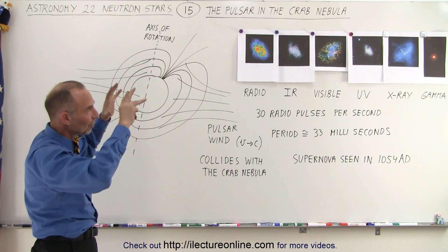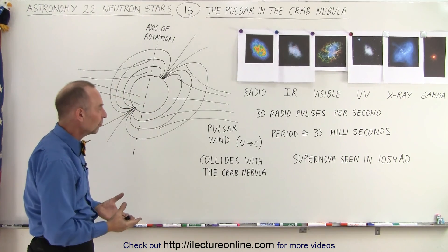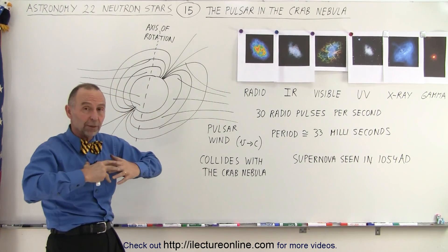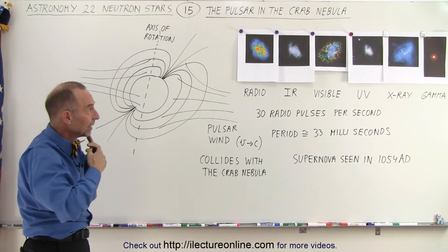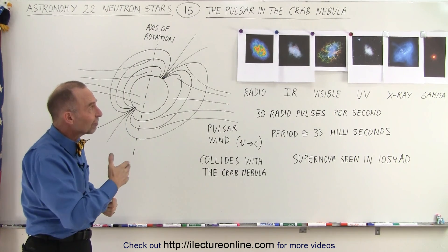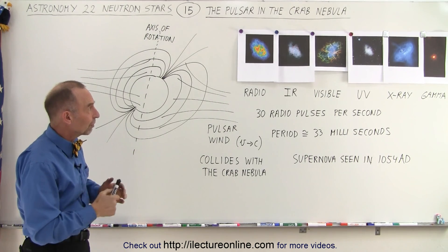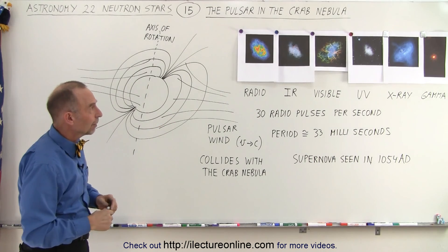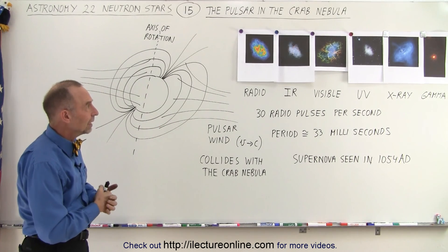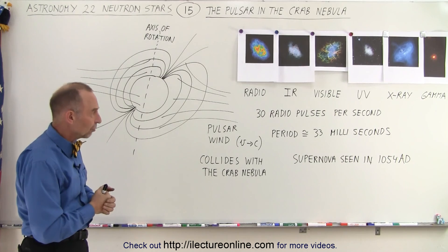And those particles collide with the nebula particles around the pulsar. It causes the electrons to be knocked off and when they come back down they will emit energies at various frequencies. And those various frequencies can then be photographed in the various E&M bandwidths.